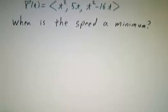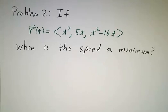For our second work problem, we're going to take a parametrized curve, and we want to figure out when is the speed a minimum? When is the particle going around this funny, curvy curve going the slowest?